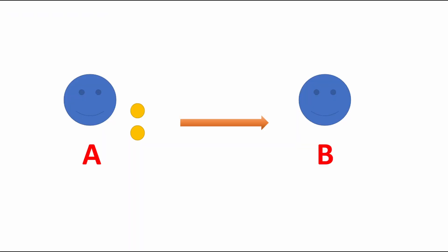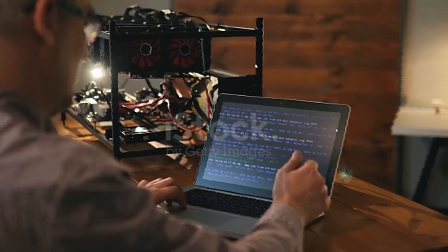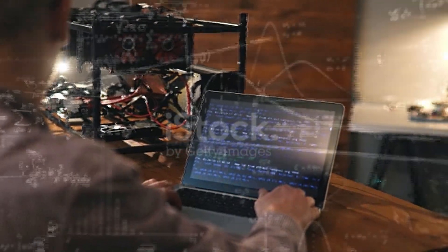As an example, suppose two persons A and B. A has to transfer 2 bitcoin to B's account. Miners will have to confirm whether A actually does have 2 bitcoin in his account or not.